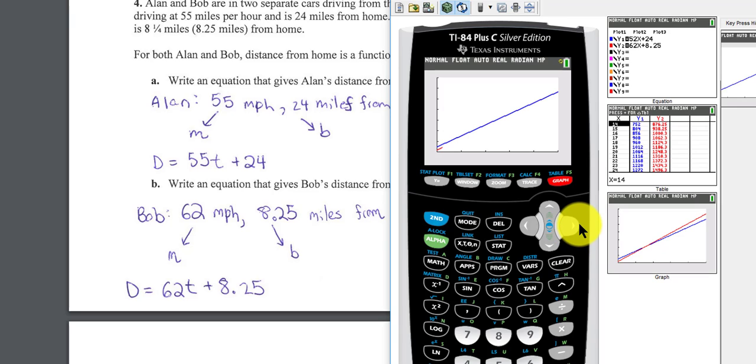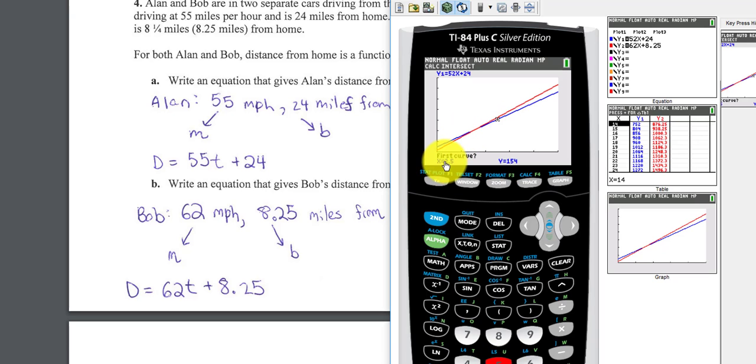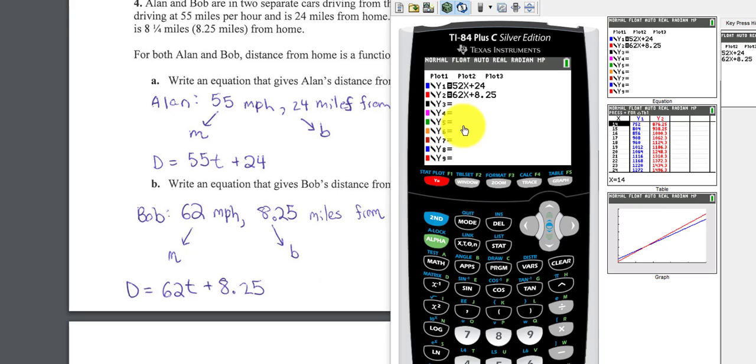I press graph. First curve. Second curve. To get the intersection, I press 2nd, trace, number 5 for intersection. There's only two curves, so when it says first curve, I can just quickly press Enter. Second curve, I press Enter. Guess where do I think the intersection is? I press Enter. And let's see what we have here. Oh, I think I entered something incorrectly. Aha!